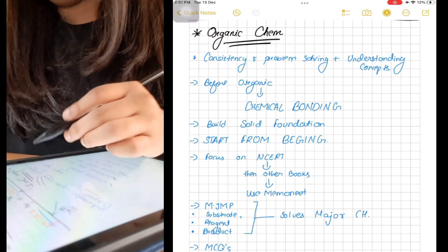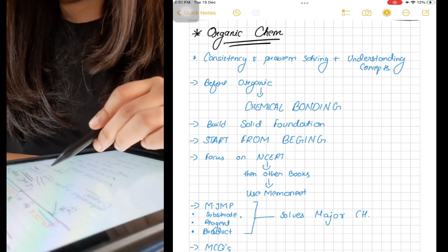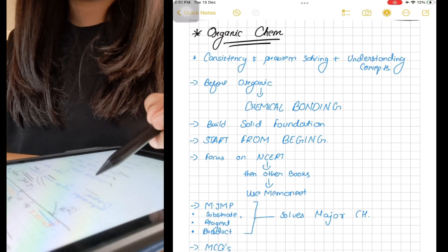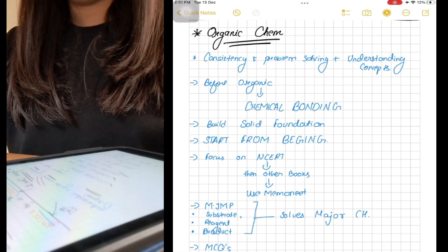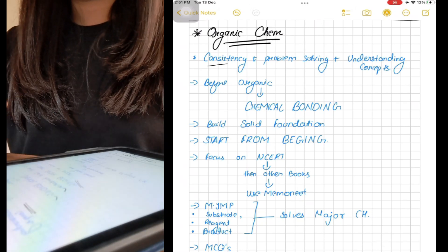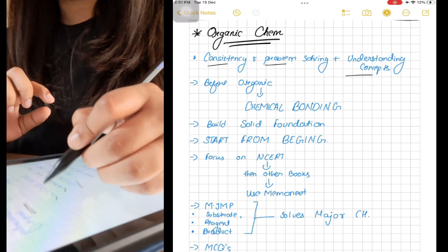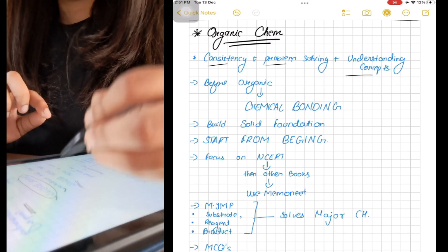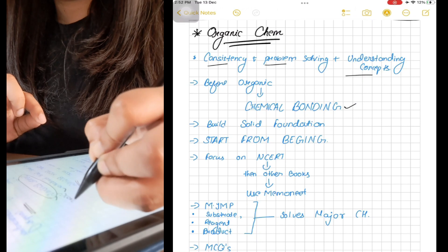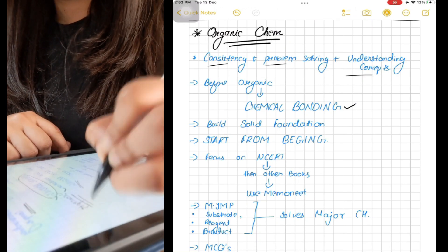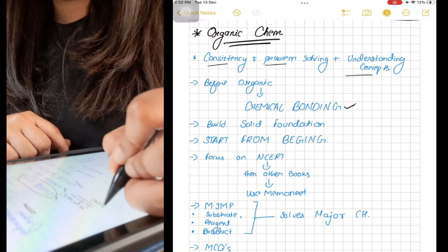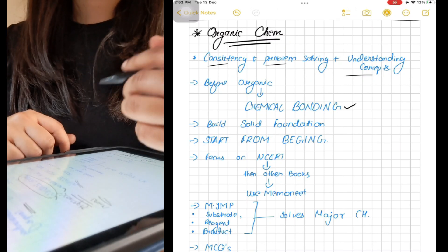Organic chemistry forms a greater chunk of the chemistry part. The key to mastering organic chemistry involves time, consistency, doing problems, and focusing on understanding the concepts. Remember, organic chemistry is the application part of your overall knowledge on chemistry. This part is time-consuming, so initially your speed of progress will be slow, but once...